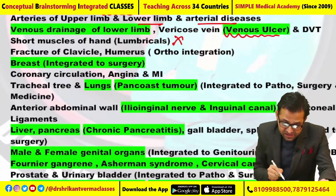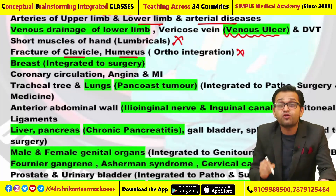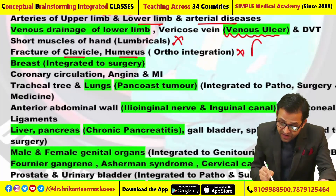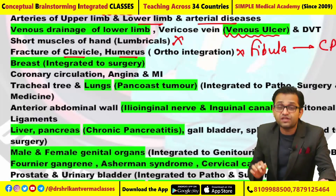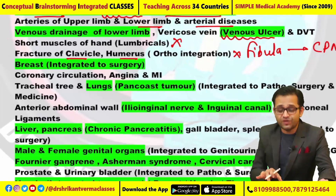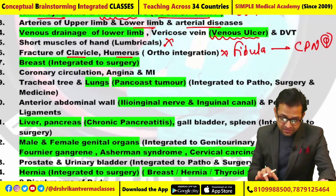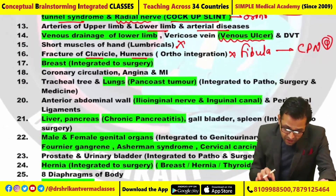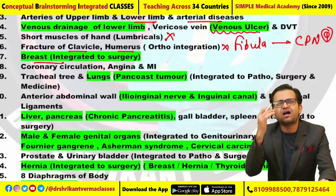Fracture of the clavicle and humerus — this question had not been asked. But fracture of the neck of the fibula and the injury to the common peroneal nerve — yes, this is a very commonly asked question and it had been there. Now look here: the breast carcinoma — many questions had been asked.